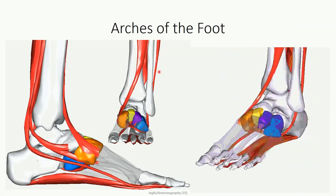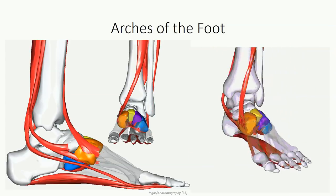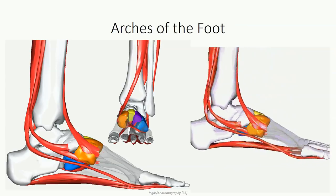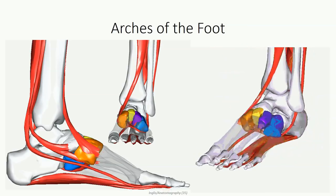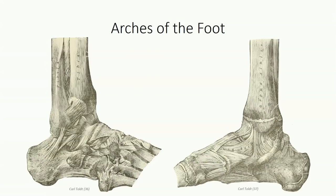Along the lateral aspect, the fibularis longus tendon traverses across the medial aspect of the foot. When this muscle contracts, it generates a compressive force that helps to maintain the longitudinal arch. Additionally, flexor digitorum brevis spans from the posterior to the anterior portion of the medial arch, and a slight degree of contraction will help to support the space. Finally, we have four distinct ligaments which provide passive reinforcement: the plantar fascia identified earlier, the long plantar ligament, and the plantar calcaneal cuboid ligament (also known as the short plantar ligament), both lying deep to the musculature and providing ligamentous support to the arch.